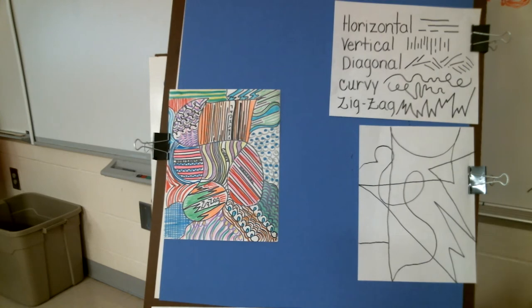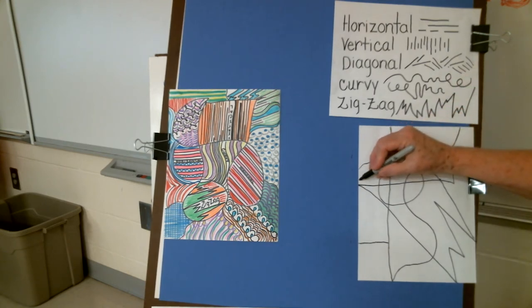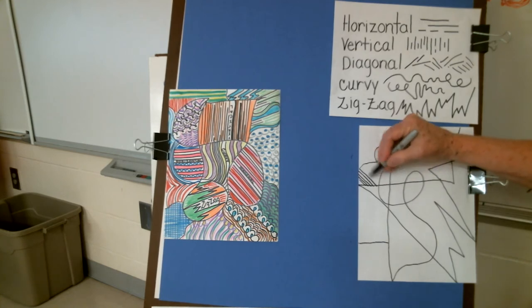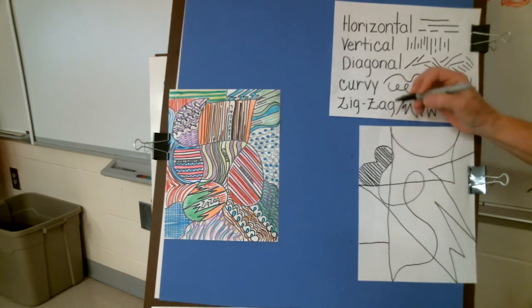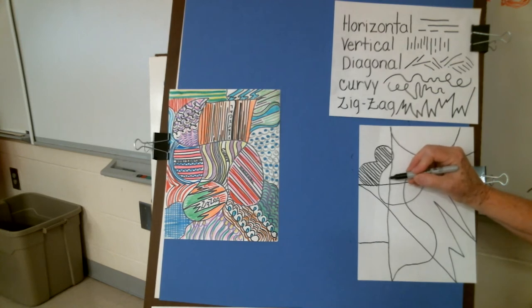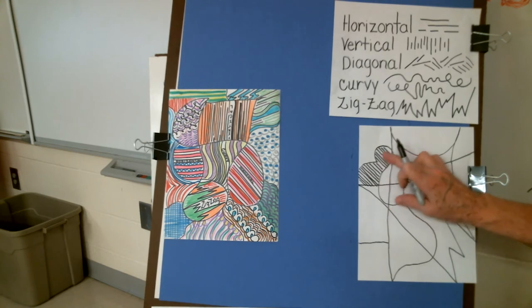Step two is to start filling in your shapes with lines. So I'll come up here and I'm going to start with some diagonal lines. And to make it look really nice, you'll want to keep those lines pretty close together. I wouldn't want to put diagonals in here to go in the same way because then you won't see the difference between these areas. So I want to put in something totally different in this area. So both these will show up really well.